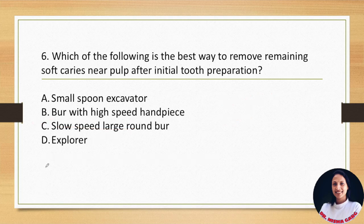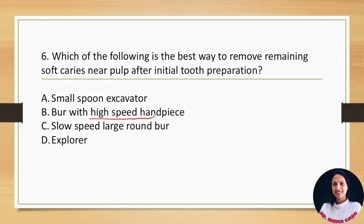Which of the following is the best way to remove remaining soft caries near the pulp after initial tooth preparation? Options are: A. Small spoon excavator, B. Burr with high speed handpiece, C. Slow speed large round burr, D. Explorer. High speed handpiece and explorer have a high chance of perforating the pulp, so these are not recommended for removing infected caries near the pulp. These options are ruled out.